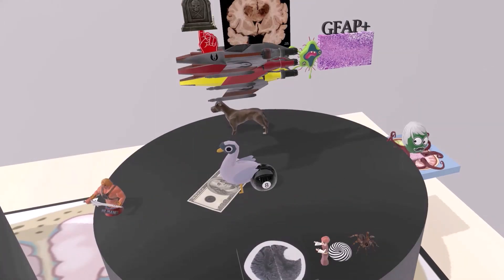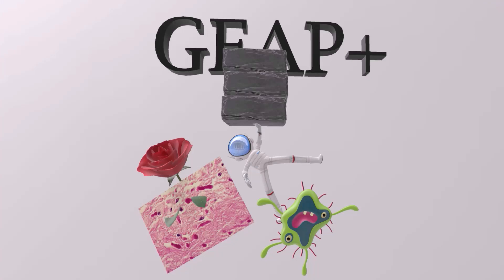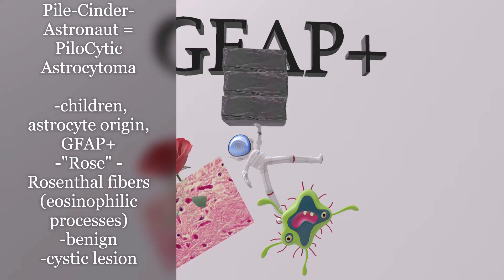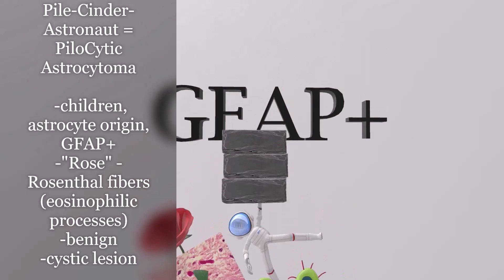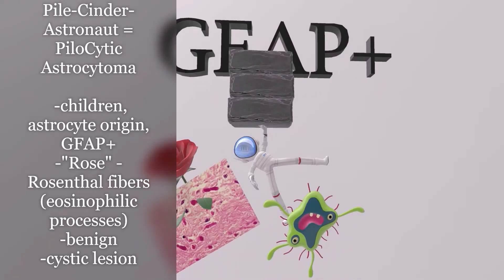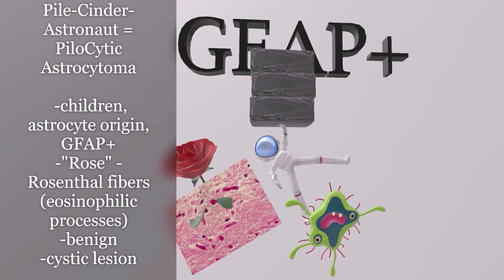Now that we've spoken about adult primary brain tumors, let's talk about primary brain tumors in children. Here we have this astronaut holding a pile of cinder blocks — pile of cinder blocks astronaut for pilocytic astrocytoma, a primary brain tumor of children. We recognize the astrocyte again, as this tumor is also of astrocyte origin. So glioblastoma multiforme is the astrocyte brain tumor in adults, whereas pilocytic astrocytoma is the form found in children. It is also GFAP positive — a marker of glial cells and a component of intermediate filaments. The histologic picture shows Rosenthal fibers, with very eosinophilic processes of glial cells associated with pilocytic astrocytoma.